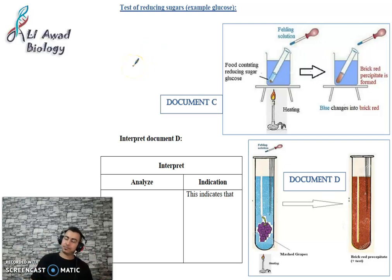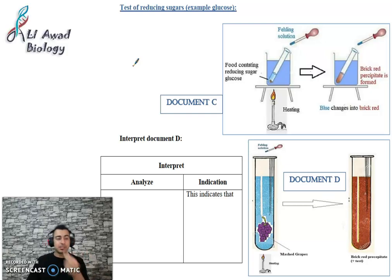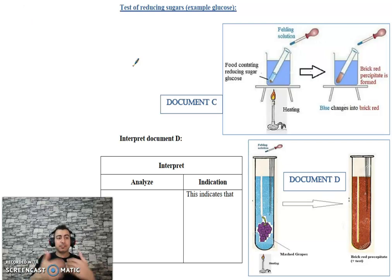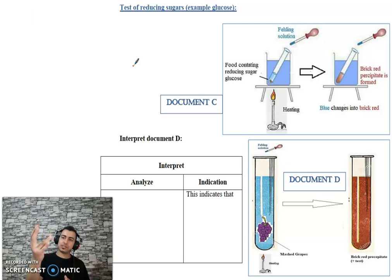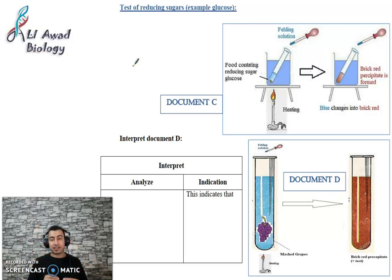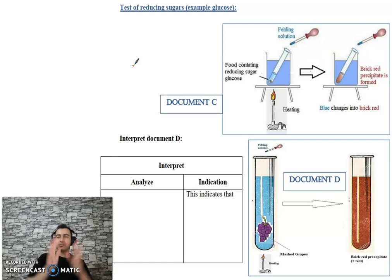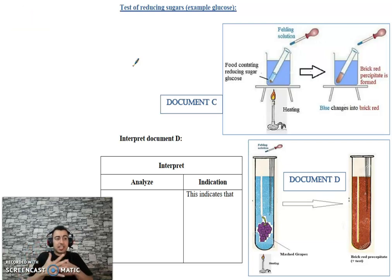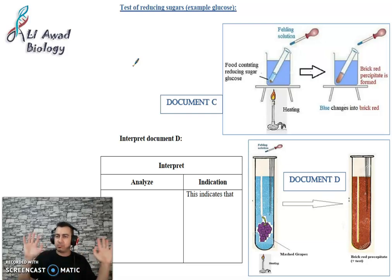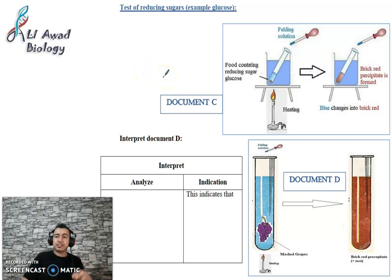Now, the test of sugar. If I want to determine if my food contains sugar, you need to know the difference between reducing and non-reducing sugar. This test is only for reducing sugars, such as glucose, maltose, and galactose. The sugar we eat at the table is not a reducing sugar, but we will refer to this as the test of glucose or reducing sugar. This test is called the Fehling test.